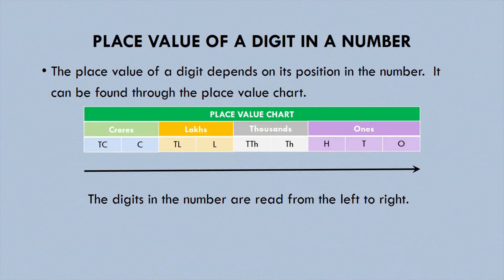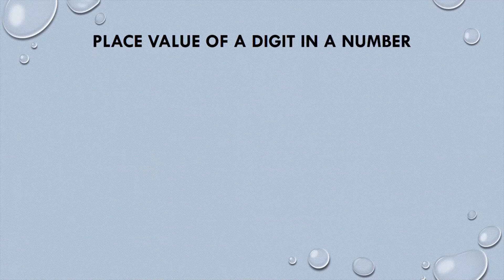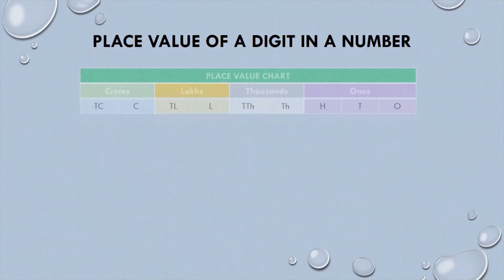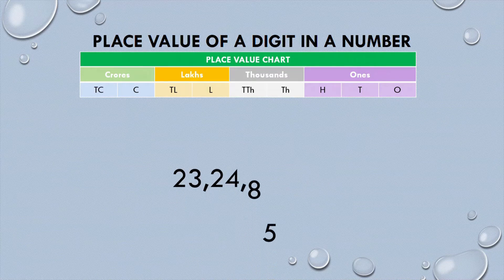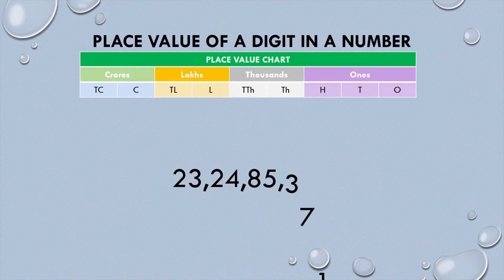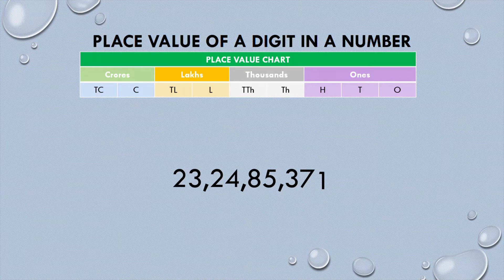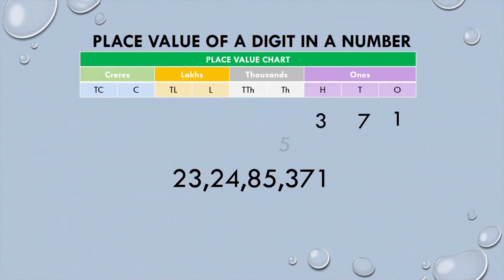The digits in the number are read from left to right depending upon the place value. Let's take an example: 23 crore 24 lakh 85 371. Let's find out the place value of each digit in this number.